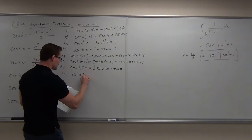Let's rewrite e^(2x) as (e^x)² and e^(-2x) as (e^(-x))². So we have [(e^x)² - (e^(-x))²] / 2. That, my friends, is a difference of squares. Factoring: (e^x - e^(-x))(e^x + e^(-x)) over 2.